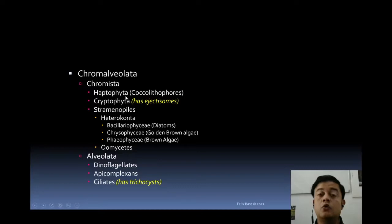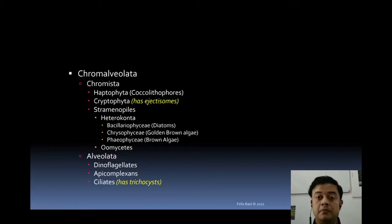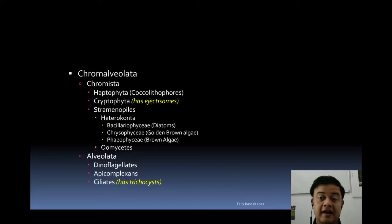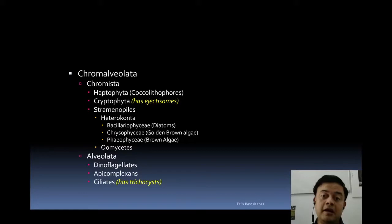Kingdom Chromista has three major groups: Haptophytes (coccolithophores), Cryptophytes, and Straminopyle. Cryptophytes have ejectisome — an interesting example of parallel evolution. Many unrelated organisms, such as cnidarians like jellyfish, also have ejectisome — structures that can expel onto predators. Ciliates have an ejectisome called trichocyst. These are all examples of parallel evolution, probably in response to adaptive constraints.